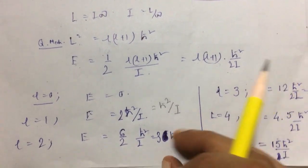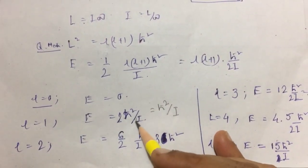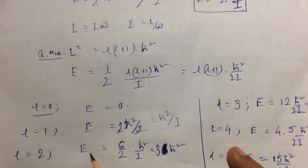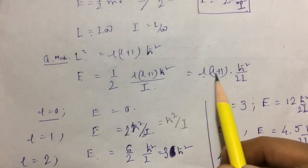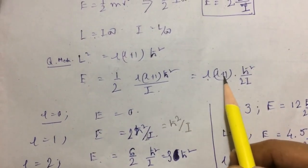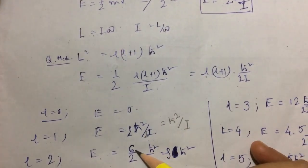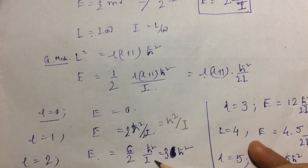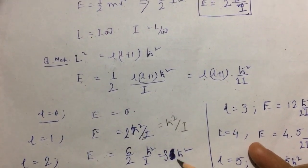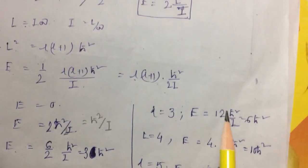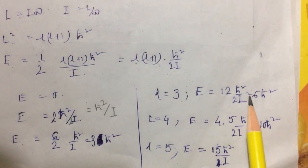And for L equal to 2, E equals 2 into 2 plus 1, that means 2 into 3 which is 6, so 6ℏ²/2I which is equal to 3ℏ²/I. Similarly, for L equal to 3, we have 12ℏ²/2I which will give us 6ℏ²/I.